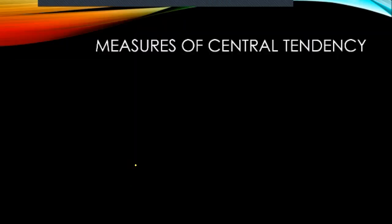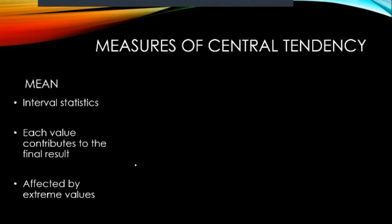Let's discuss the three measures of central tendency, starting with the mean. The mean is an interval statistic — we can compute it if data is in at least interval scale, which includes ratio. Each value contributes to the final result, so no value should be skipped. Thirdly, the mean is affected by extreme values. If there are outliers — values that are extremely high or extremely low — it is suggested we don't use the mean, because it will not represent the data set.